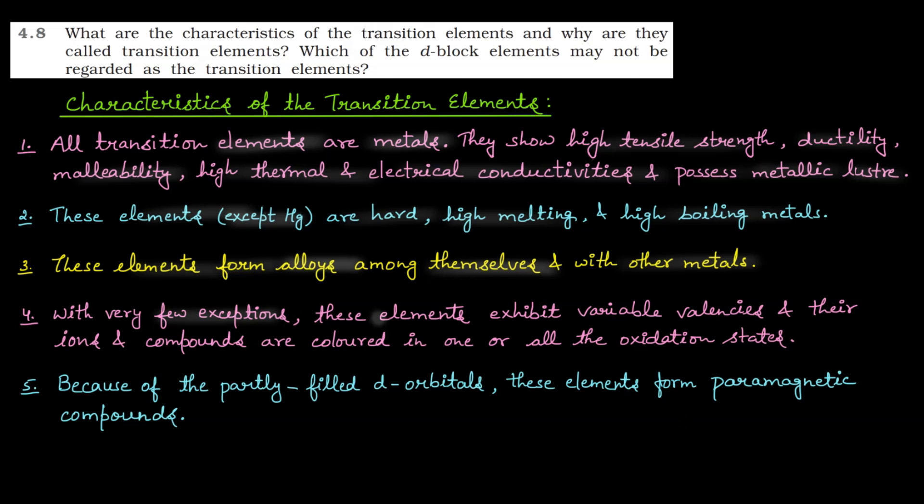Next one is, with very few exceptions, these elements exhibit variable valences and their ions and compounds are colored in one or all of the oxidation states.